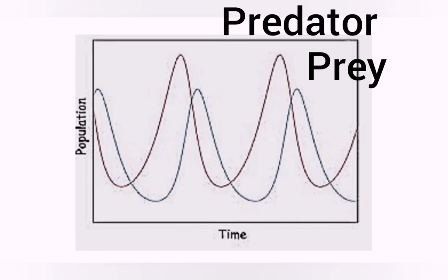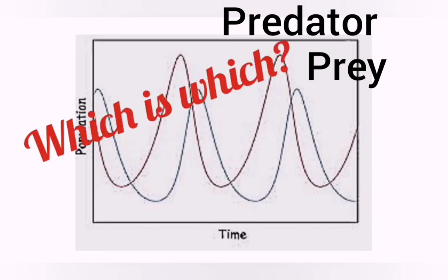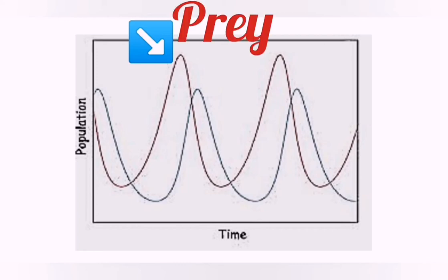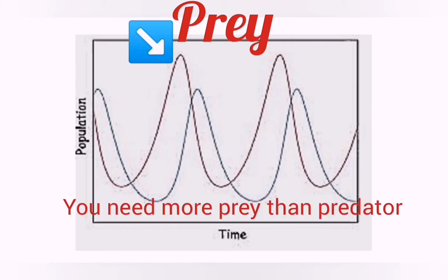You might be getting a graph like this in an exam, and they ask you to identify which line is the prey and which is the predator. The line that goes the highest is usually the prey, because you would always need more prey — like buck — in an area for the lions to feed on. So the line that goes the highest would be the prey.